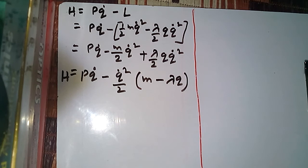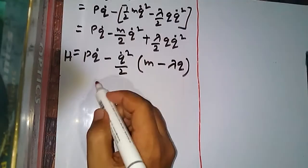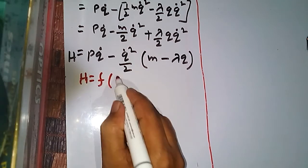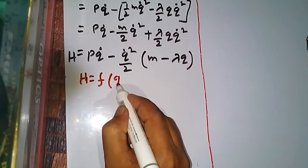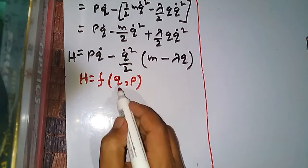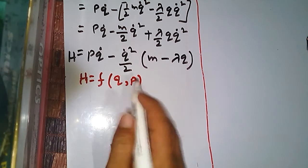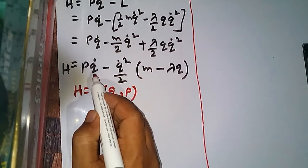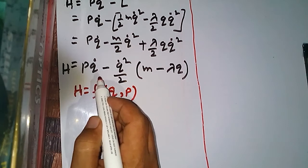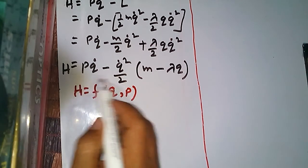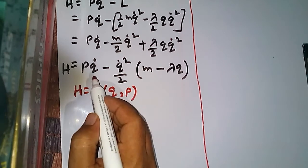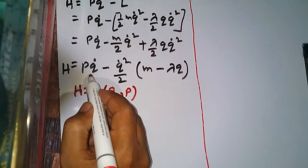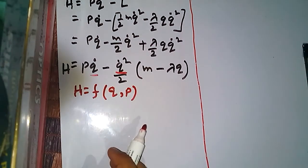This is not the answer because the Hamiltonian must always be a function of position and momentum, that is q and p only. Here the Hamiltonian is also a function of q̇, which is strictly prohibited for a standard Hamiltonian. Therefore we must eliminate q̇ by expressing it in terms of p and q.